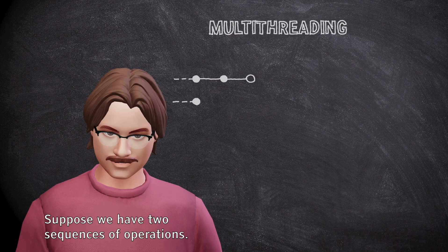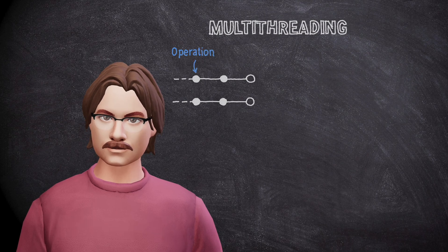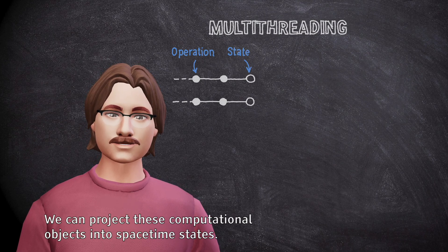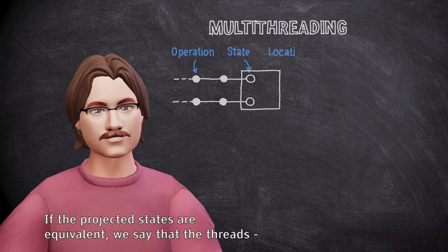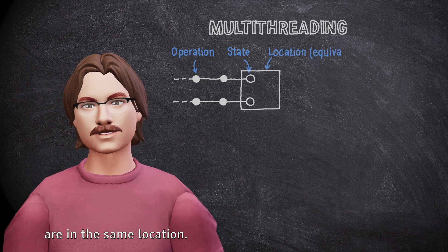Suppose we have two sequences of operations. We can project these computational objects into spacetime states. If the projected states are equivalent, we say that the threads are in the same location.